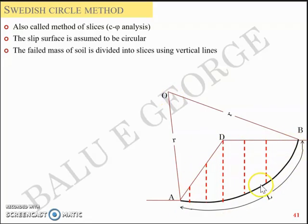So in short, the slip surface is assumed to be circular. And the failed mass of the soil ADB, the mass here is divided into slices using vertical lines and that's why it's called as a method of slices.